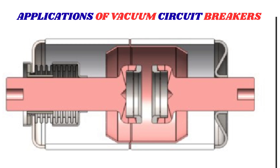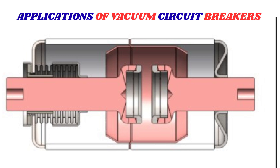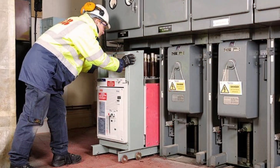Vacuum circuit breakers have several advantages that make them a popular choice for power distribution and transmission systems. Some key benefits include the following. First, compact design: one of the standout features of VCBs is their compact design. By utilizing a vacuum interrupter, VCBs can be designed to be incredibly space-efficient, making them perfect for applications where real estate is limited. This compactness allows for more flexible system design, easier installation, and reduced overall system size.